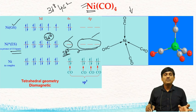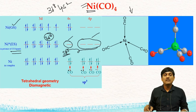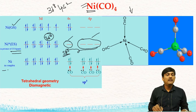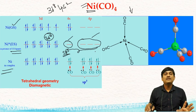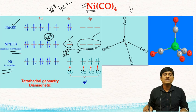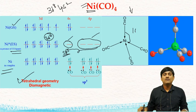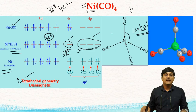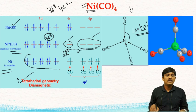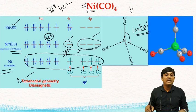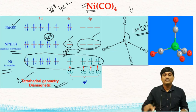These four empty sp³ hybridized orbitals are filled by four CO ligands, each donating a lone pair of electrons. The final outermost electronic configuration is 3d¹⁰ 4s² 4p⁶. The geometry of Ni(CO)4 is tetrahedral due to sp³ hybridization, with a bond angle of 109°28'. Since all electrons are paired, the complex is diamagnetic.